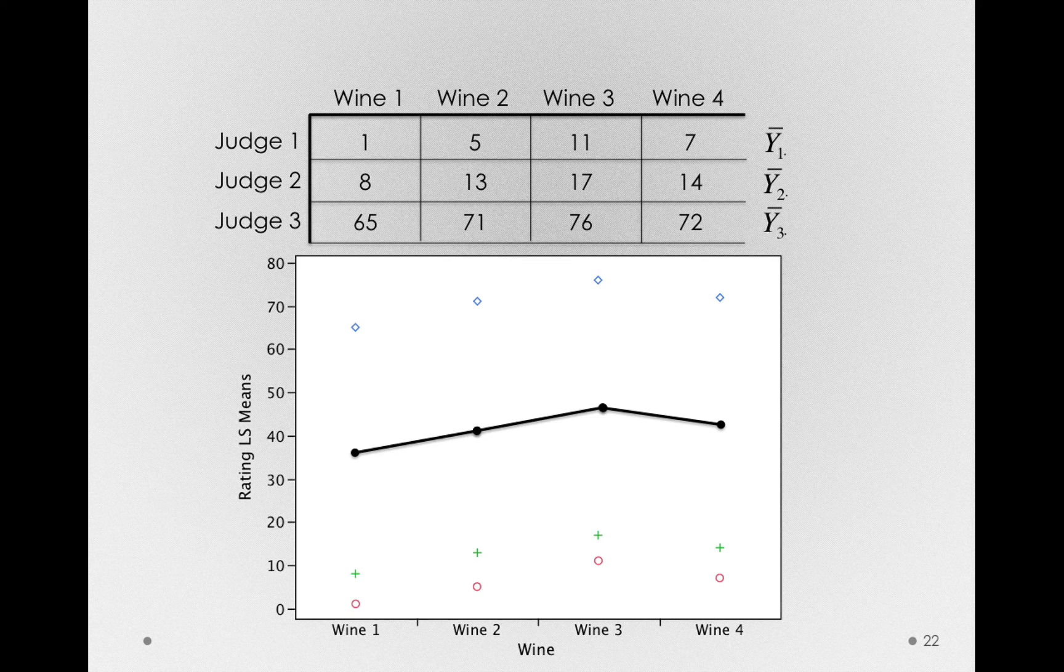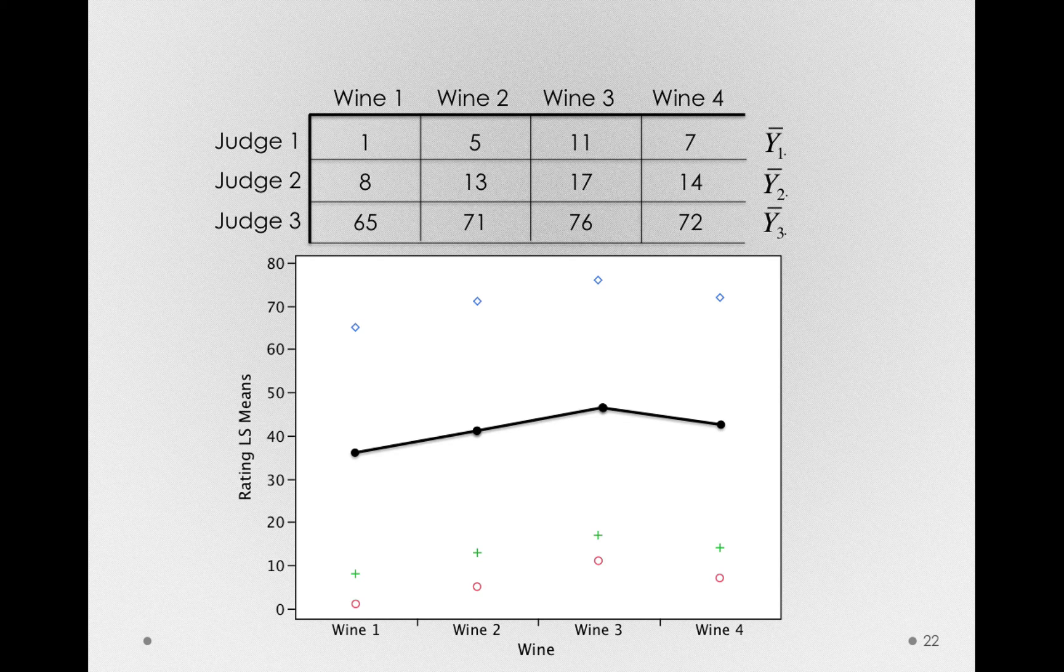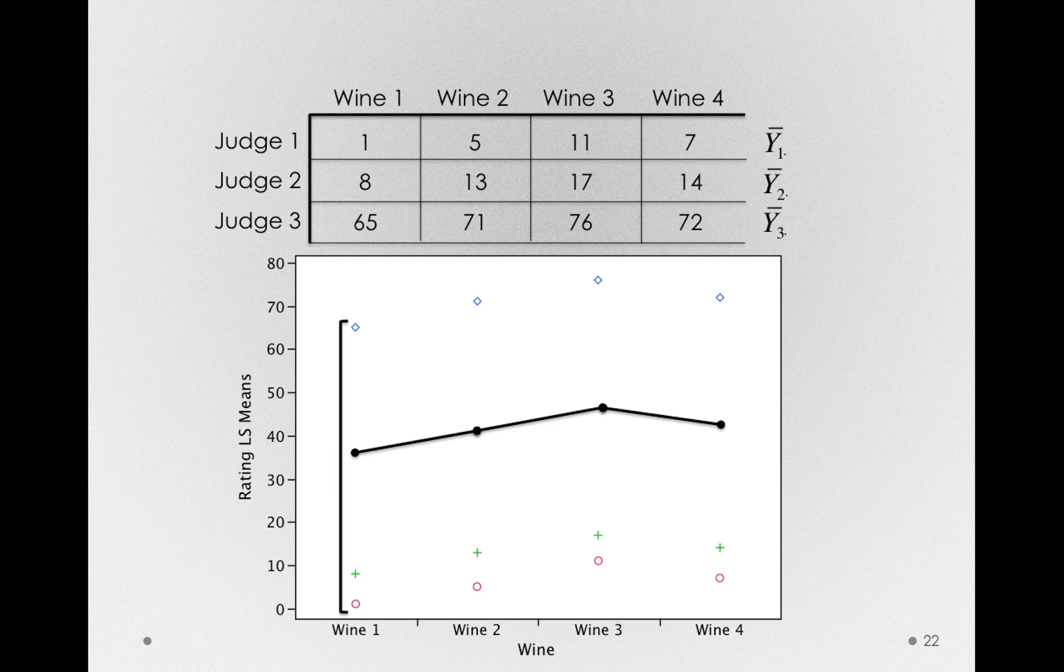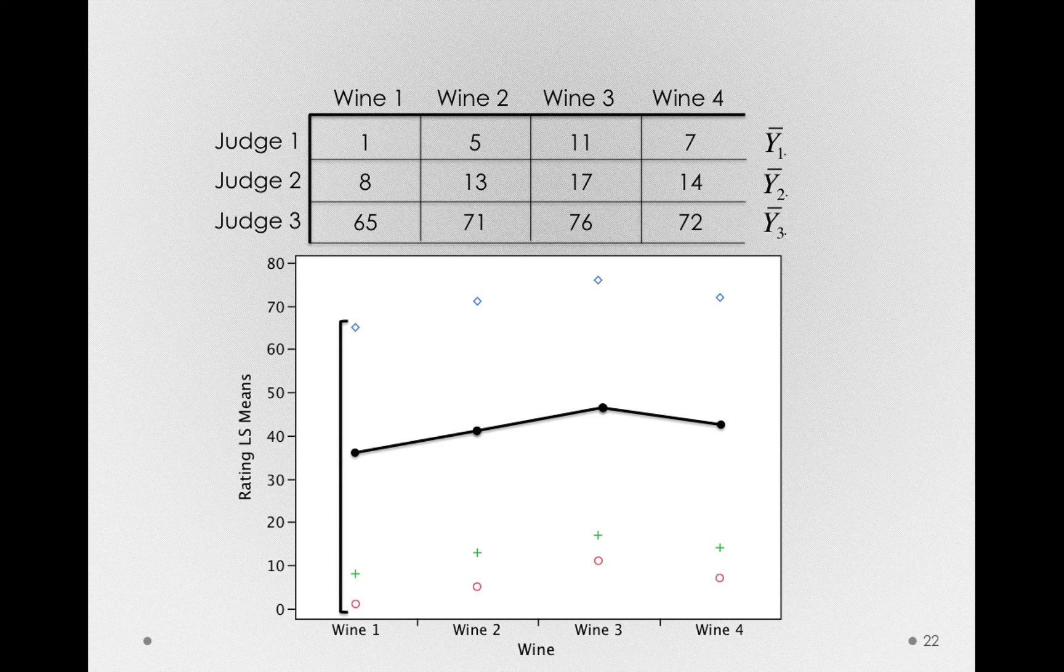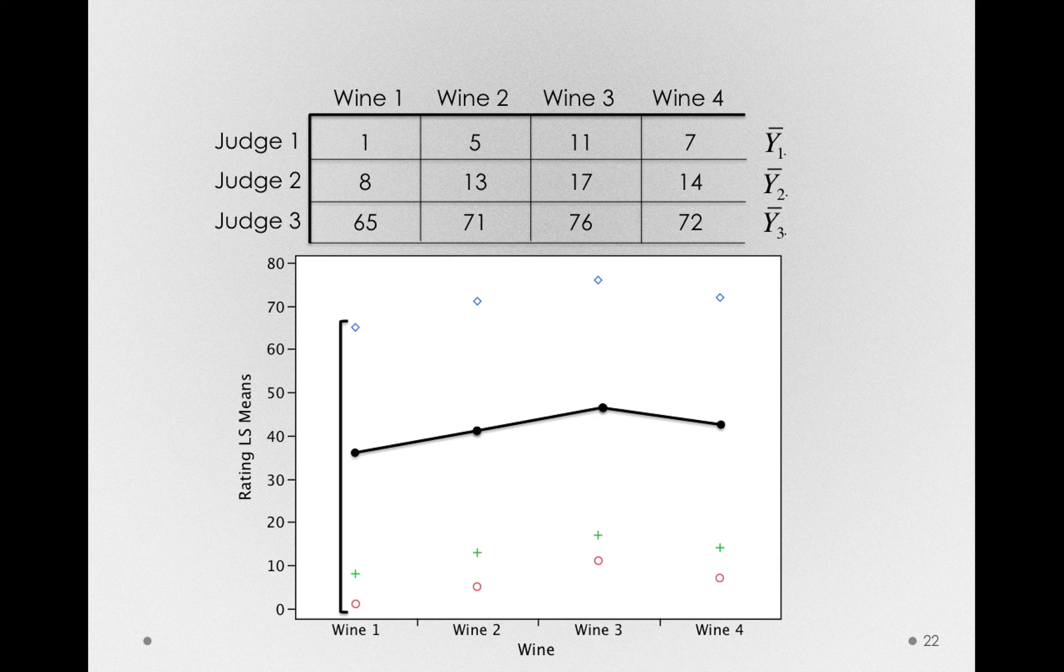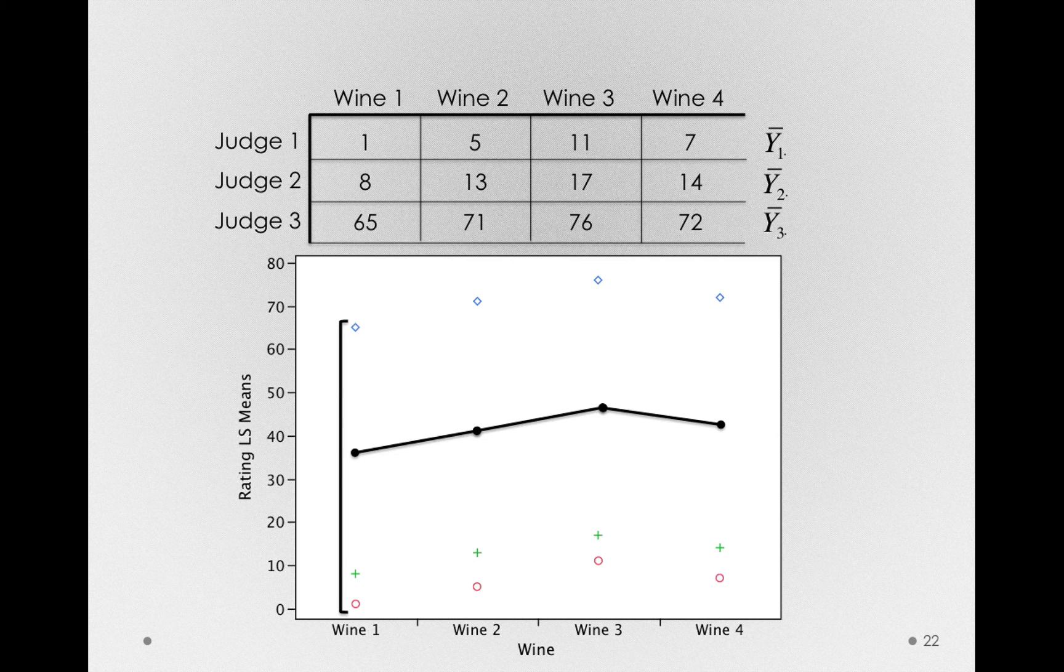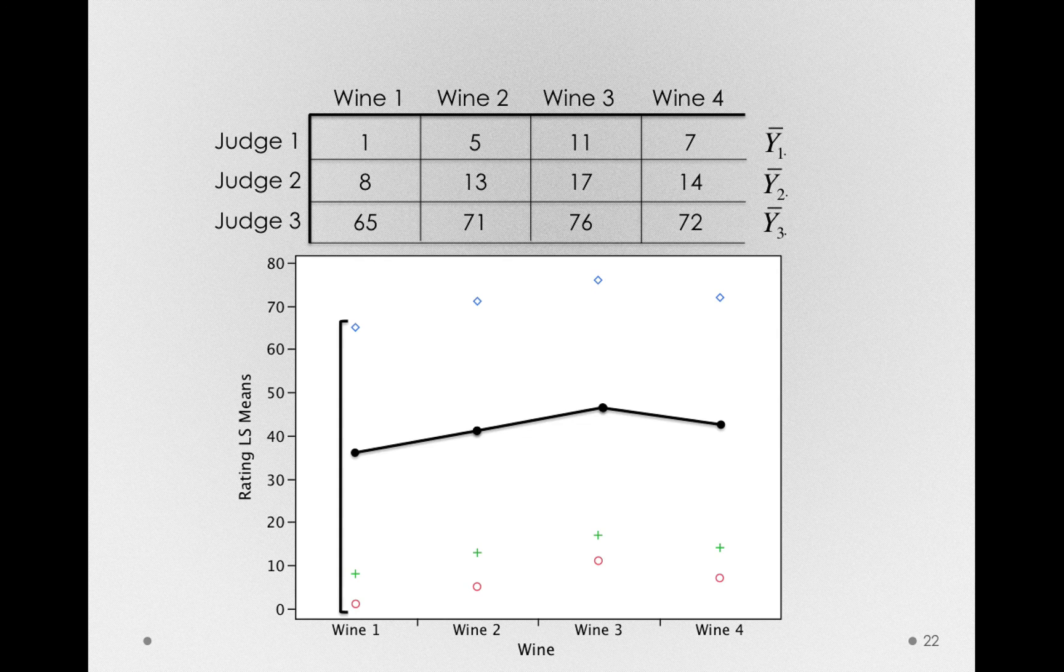For the moment, I want you to ignore the fact that these observations came from repeated measurements and just look at the variability here. Looking in just wine one, notice the spread of ratings. Normally, when we're looking at the magnitude of effects, we do it relative to the variability in the observations around that effect. Notice here that the effect looks actually pretty small relative to the prevailing variability.